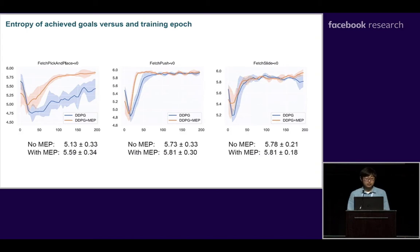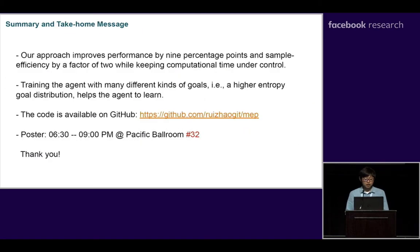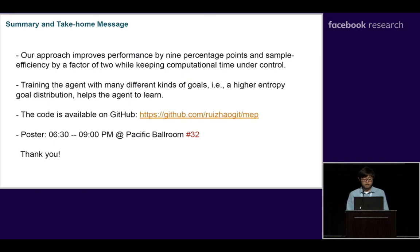To verify the consistency between the developed framework and the underlying theory, we calculated the entropy of achieved goals during training. From all three figures, we can see that the entropy of the goal distribution is indeed increased during training. To summarize, our approach improved performance by 9 percentage points and sample efficiency by a factor of 2, while keeping computational time under control. The take-home message is that training the agent with many different kinds of goals — a higher entropy goal distribution — helps the agent to learn.